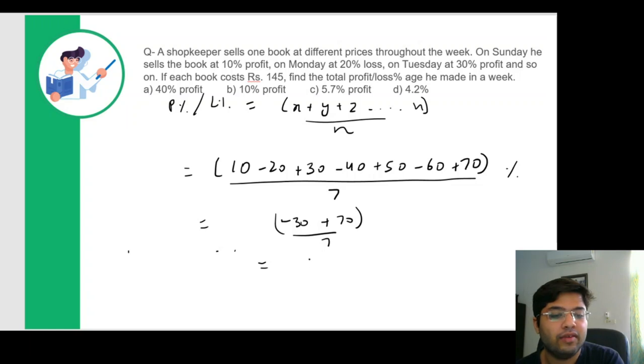This gives us 40 by seven, which is also what we got by actually solving this question by taking 100X as variable that we'd already solved. So the answer would again be 5.7 percent. So now you can see if you know this formula, then these kinds of questions are very easy to solve.